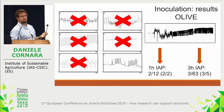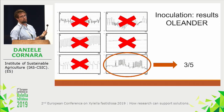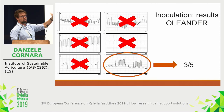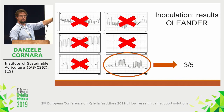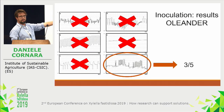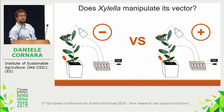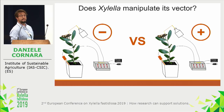These results are consistent with oleander. In oleander, we had no inoculation with behaviors other than the spikelet burst. Five Philaenus performed the spikelet burst; in three cases we got inoculation. Another surprising finding — our second question: does Xylella have an effect on its vector?